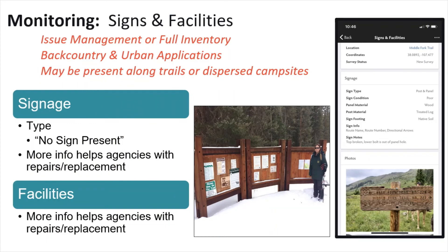The signs and facilities module is very straightforward. It can be used for issue management related to damaged or graffitied signs, or to inventory where certain signs or facilities such as benches, picnic tables, fire rings, etc. are located. When inventorying signs, pay attention to the information that is present — is it clear? Is it current? Is it seasonal? Is it accurate? Be sure to include this information in your assessment.